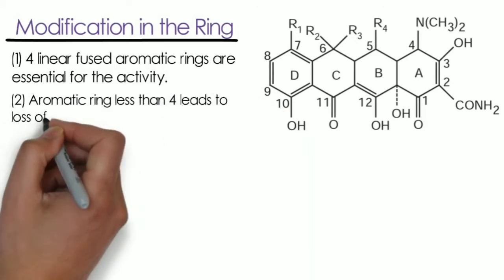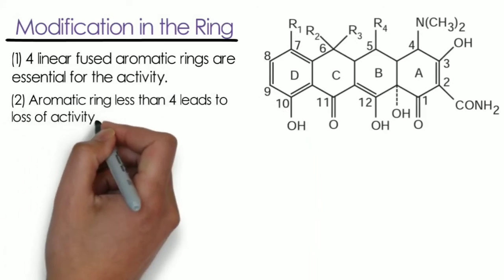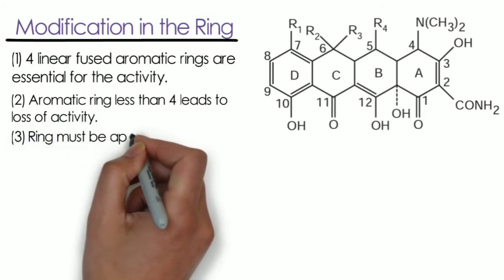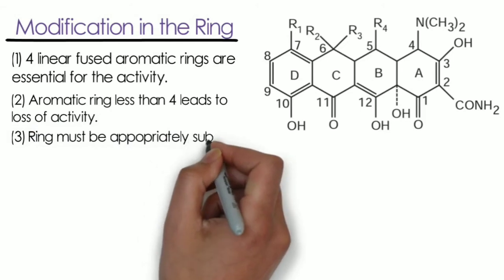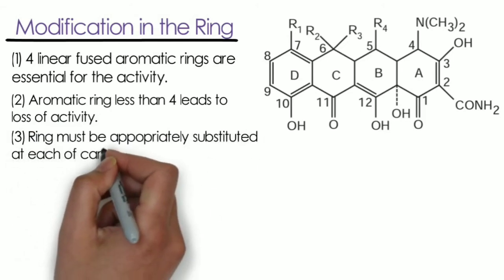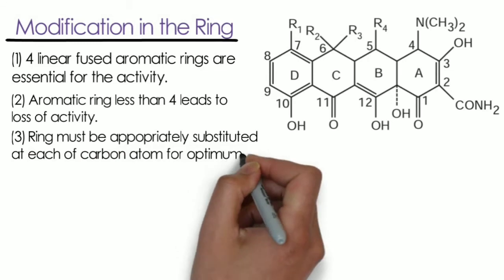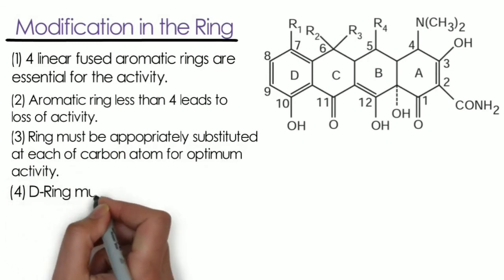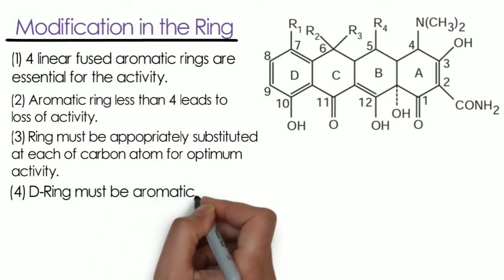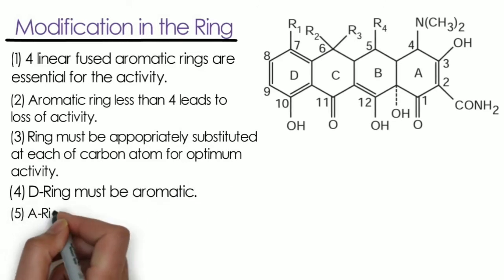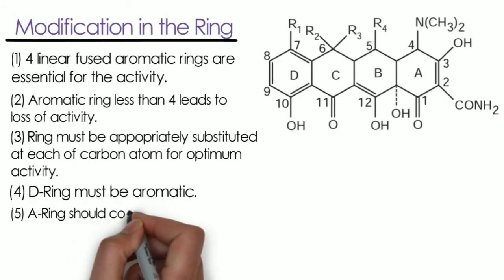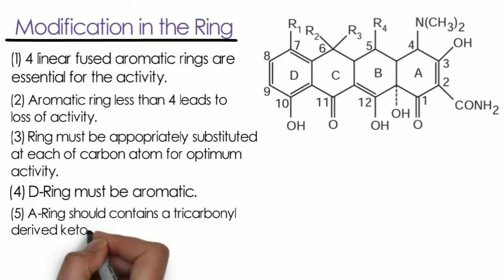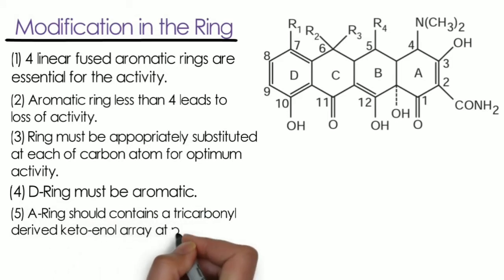The second point: fewer than four aromatic rings leads to loss of activity. Third point: the rings must be appropriately substituted at each carbon atom for optimum activity — all substitutions should be done in a way that avoids loss of activity. Fourth point: the D ring needs to be aromatic; it cannot be replaced with an alicyclic or aliphatic ring, as the aromatic D ring is essential for antibacterial activity.